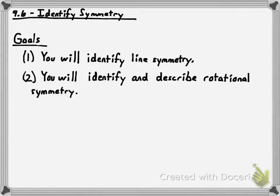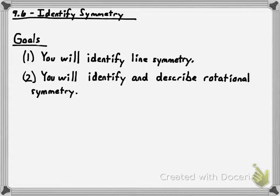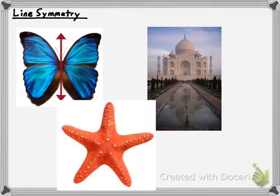Hey there, how's it going? We're going to start section 9.6 right now and we're going to be working with symmetry. Two types of symmetry I'm going to be teaching you about today. One of those is line symmetry — you're expected to be able to identify when a figure has line symmetry, also known as reflectional symmetry. And the second type is rotational symmetry, also known as point symmetry or radial symmetry. Let's go ahead and talk about these two different types, beginning with line symmetry.